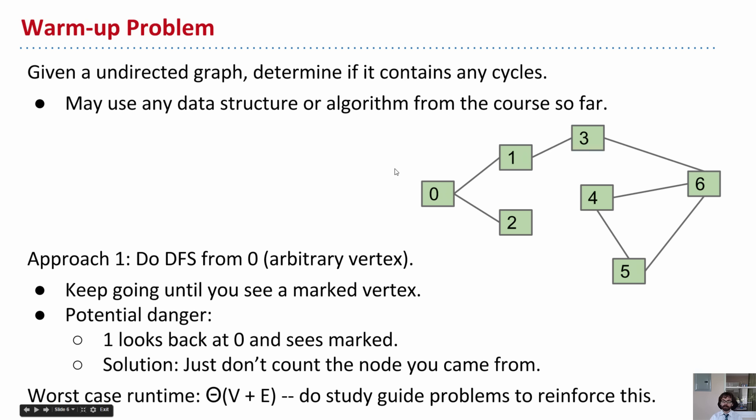And then there's one little caveat, which is remember that the way we wrote the DFS algorithm a few lectures ago is that if we start at vertex 0, then go to 1, when we run the DFS of 1, we're going to look back at 0 and see that it's marked already.